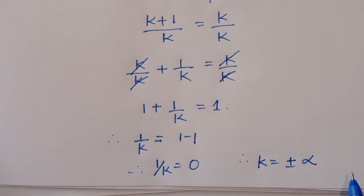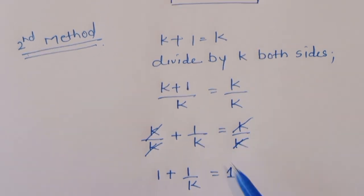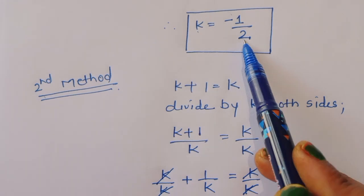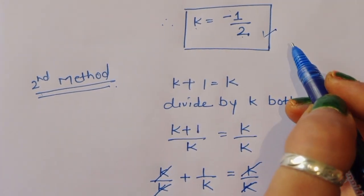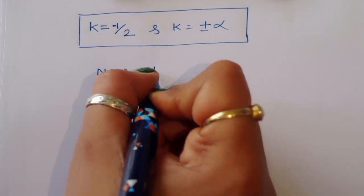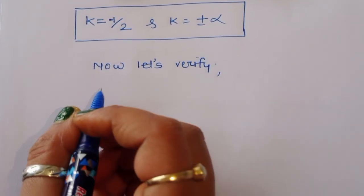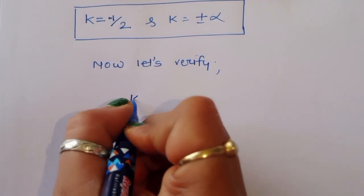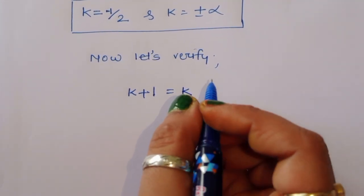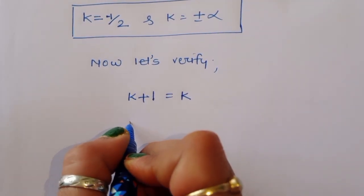Therefore 1/k is equal to 1 minus 1, which gives 1/k is equal to 0. So we can say k is equal to plus or minus infinite. So we got two values of k: minus 1 by 2 and infinite. Let's verify for k is equal to minus 1 by 2. Now let's verify — the question is √(k+1) = √k.